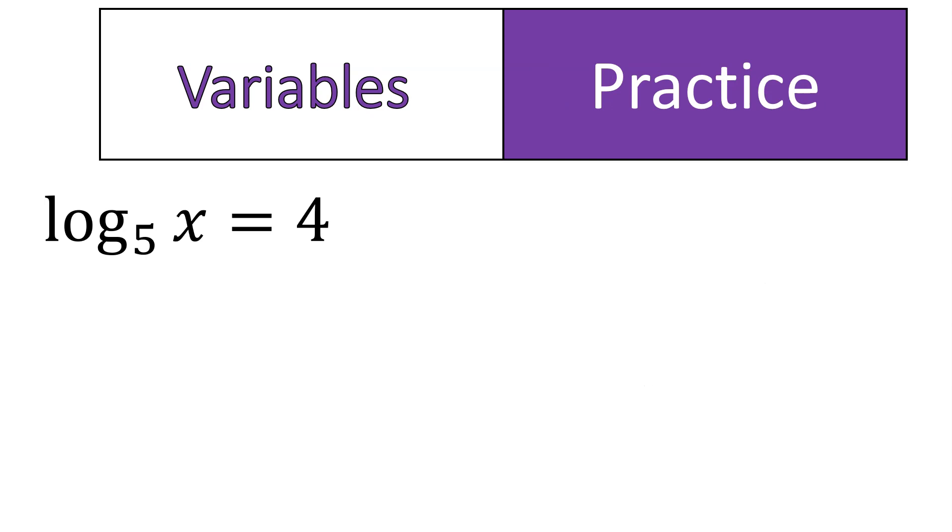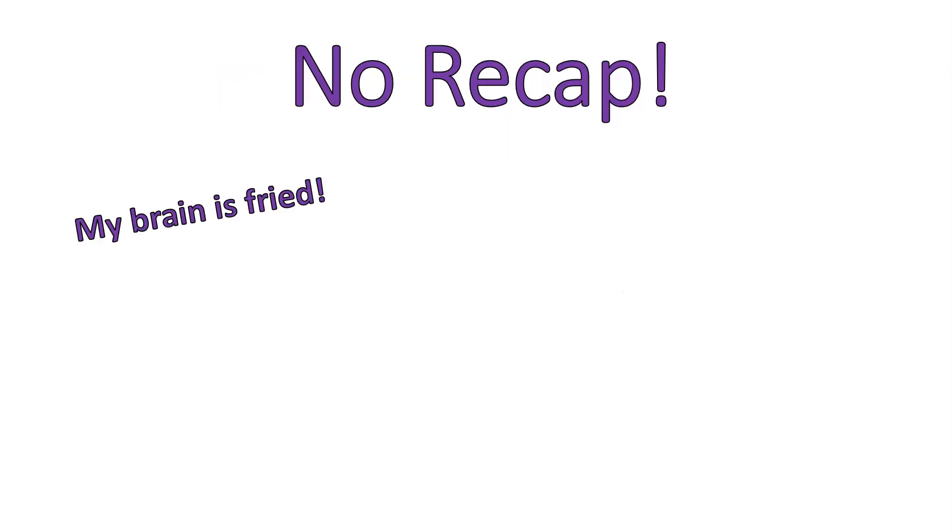Go ahead and practice on this one. I gave you some larger numbers to work with. Go ahead and try that one out. Hey, welcome back. You set it up. 5 to the power of 4 is equal to x. 5 to the power of 4 is 625. There we go for our final practice question of this lesson.